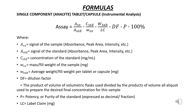For a single component assay of a capsule or tablet using instrumental analysis, the following formula is given. The assay is equal to the signal of the sample, multiplied by the concentration of the standard, multiplied by the average weight per tablet or capsule, multiplied by the dilution factor, times the potency of the standard, multiplied by 100%. The product is divided by the signal from the standard, multiplied by the weight of the sample and the labeled amount.